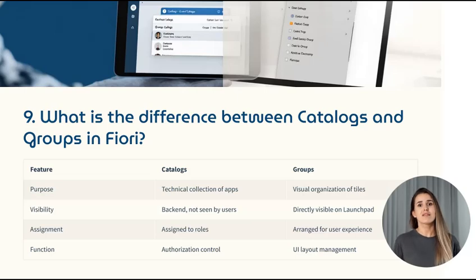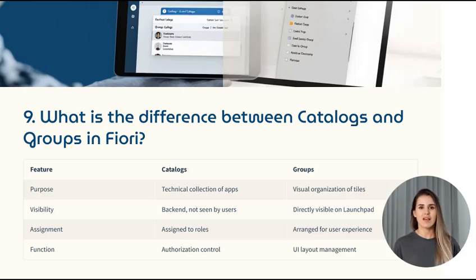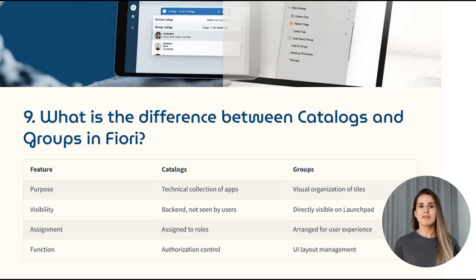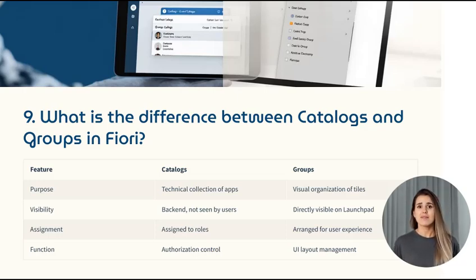Question 9: What is the difference between catalogues and groups in Fiori? Catalogues are collections of apps assigned to roles, while groups are what the end user sees on the Launchpad. Catalogues are more technical and used for authorization, whereas groups handle the UI layout.